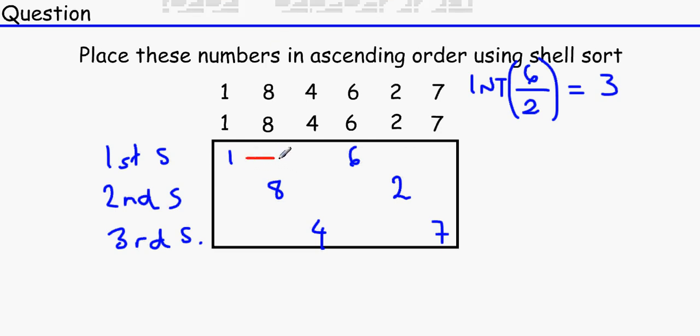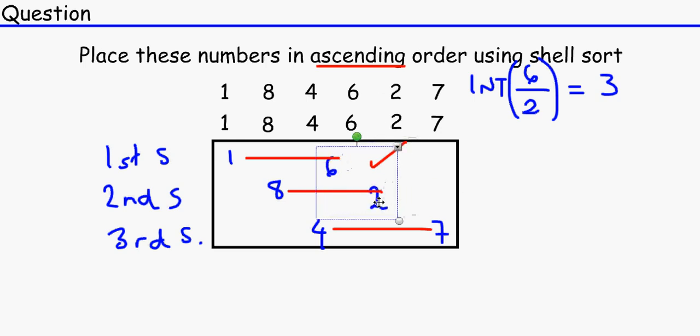So we're going to compare these numbers here, these numbers here, and these numbers over here. One and six, that is in ascending order, so that's done, that's good. Eight and two, that's not in ascending order. So we can swap that around. So there you go, two and eight. And four and seven, that's in ascending order.